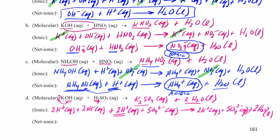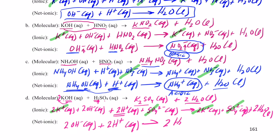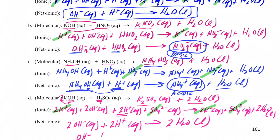Now cancel the spectators — sulfates cancel on both sides, and both potassiums cancel. What remains: two OH- and two H+ form two H2O liquid. That reduces down to OH- and H+ making H2O, which you should have expected because this was a strong acid with a strong base.